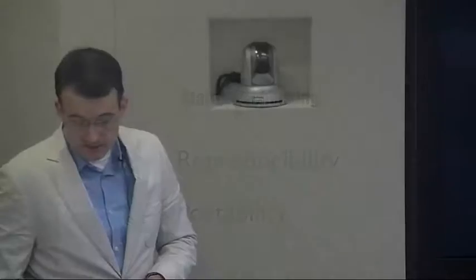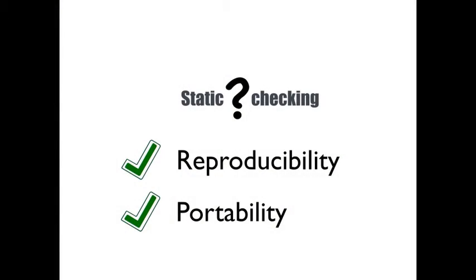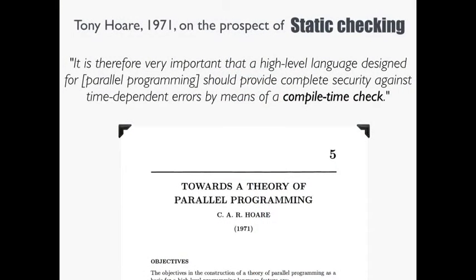Okay, so the hope would be to instead use static checking. And this is not a new idea, of course. Fully 45 years ago, there was this elegant quote about this very topic. It is therefore very important that a high-level language designed for parallel programming should provide complete security against time-dependent errors by means of a compile time check. So I love this because it provides motivation for our current work. And I think this is a great dream. And this was the quote I was wondering if you'd want to disavow now. But it seems that we haven't achieved this goal yet. We've done a shabby job of implementing this dream. And why is that?